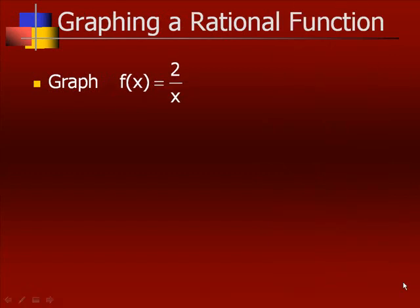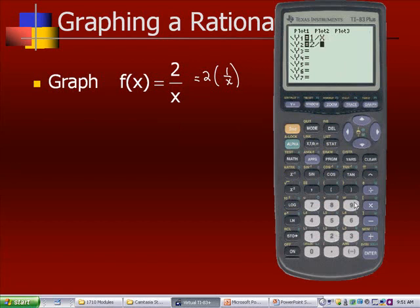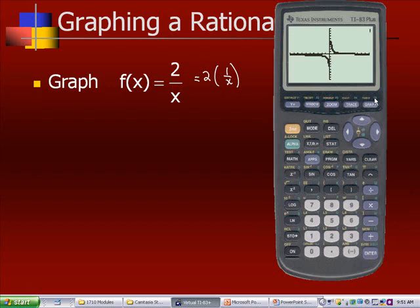If we wanted to graph f of x equals 2 over x, that's the same as 2 times 1 over x — the same function but stretched by a factor of two, which we can also do on the calculator. To see the difference, let's graph 1 over x as the first function and 2 over x as the second, making the first one a bolder line. When we graph them, notice they're pretty much the same shape, maybe a little bit steeper.